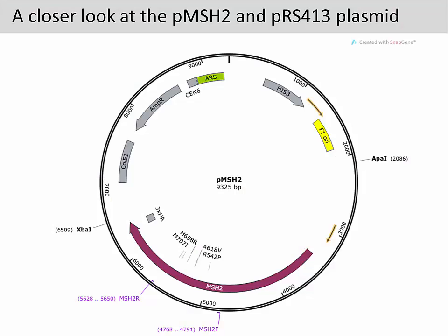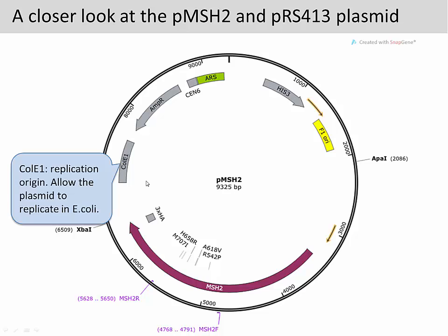Let's take a closer look at the PMSH2 plasmid. A plasmid DNA usually has replication origins that allow replication in the host cells. The PMSH2 plasmid has three replication origins. The first one, ColE1, is the replication origin that allows replication in E. coli.